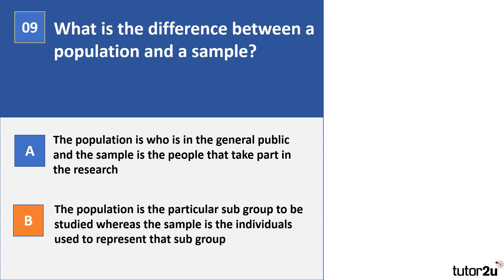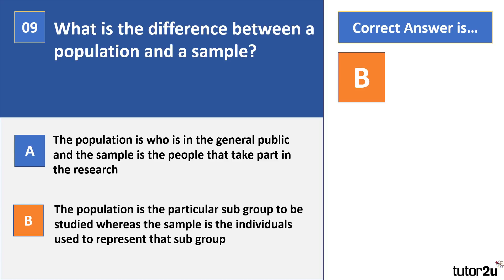Question 9. What is the difference between a population and a sample? A, the population is who is in the general public and the sample is the people that take part in the research. B, the population is the particular subgroup to be studied, whereas the sample is the individuals used to represent that subgroup. The correct answer is B. The sample are the people in your research, and the population is the people those individuals are supposed to represent. When students say 'the sample is unrepresentative,' they mean it may not reflect the target population.